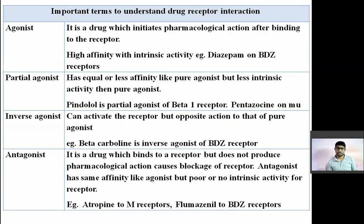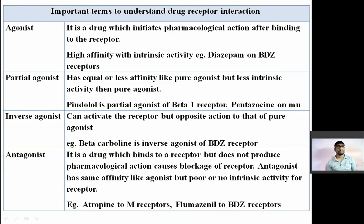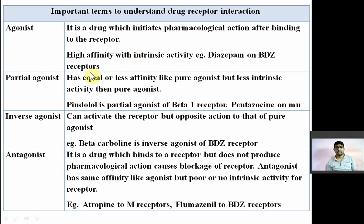Now I will explain the important terms to understand receptor interaction. What do you mean by agonist? An agonist is any drug or chemical that interacts with the receptor, stimulates it, and shows pharmacological action. It binds to the receptor and initiates pharmacological action. It is known as a full agonist and produces full action. These have high affinity and high intrinsic activity. Affinity is the capacity of a drug to combine with the receptor; intrinsic activity is the pharmacological activity after combining with the receptor.